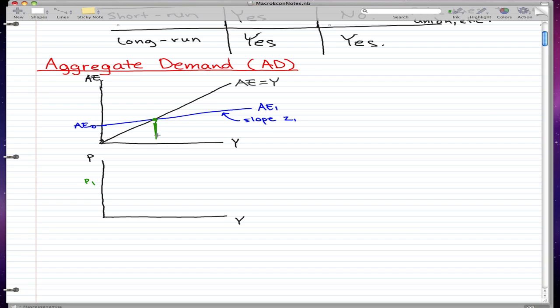This point will be our equilibrium income or equilibrium output. Let's have this equilibrium output be Y1, and let's have it reflect down to this graph that I have in the bottom where I have P, the price level, as the vertical axis.